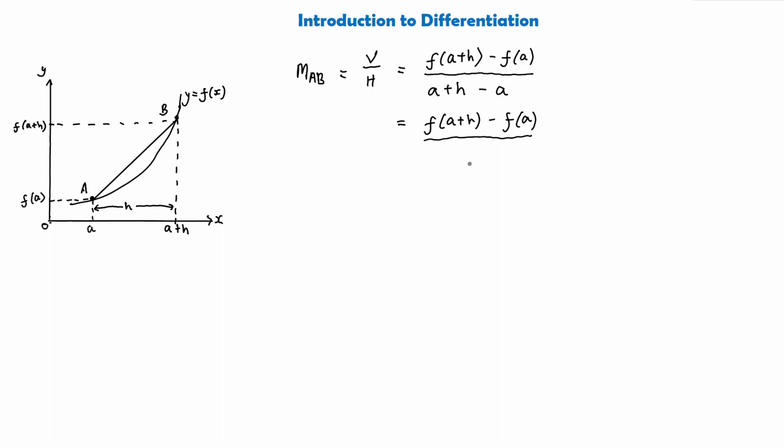and on the bottom we get a minus a, which is zero plus h, and we would say here that this is going to be our gradient of the line AB, but this is not a great approximation for the curve.